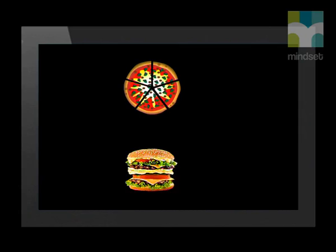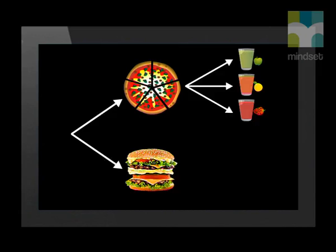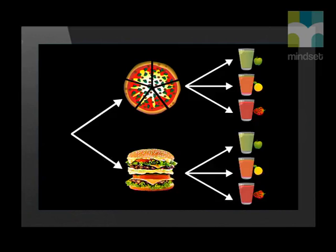Let's look at two different methods we could use to calculate this. The first method is to draw up a tree diagram to see the full amount of outcomes that can occur. Firstly, we can choose between hamburger or pizza. Then we can choose between three juices — apple, orange, or strawberry. To get the amount of different outcomes, we go along the arms of the tree diagram and write out the different outcomes that can occur.